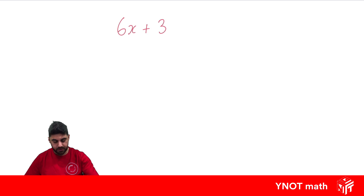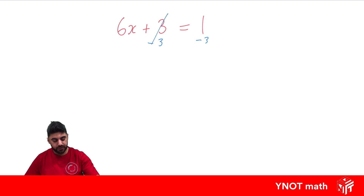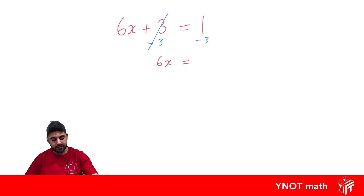6x plus 3 equals 1. We've got two things we need to get rid of because we need x to be by itself. Remember, the number on its own is what we get rid of first. So to get rid of that plus 3, we're going to subtract 3 from both sides, because 3 minus 3 is 0 and it disappears. Equals under equals — we're just left with 6x.